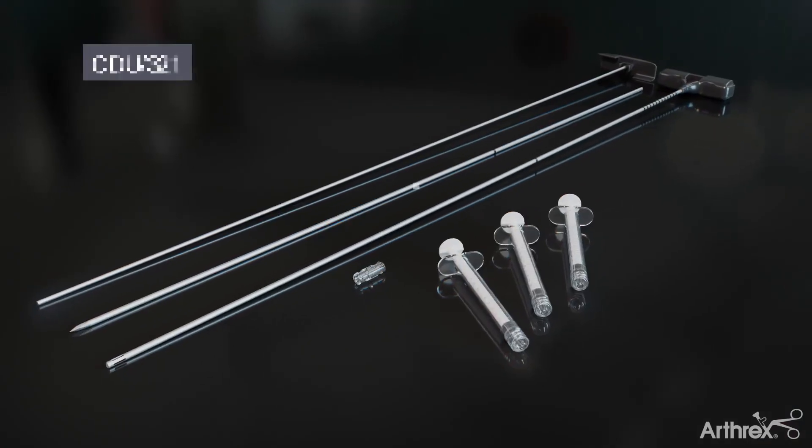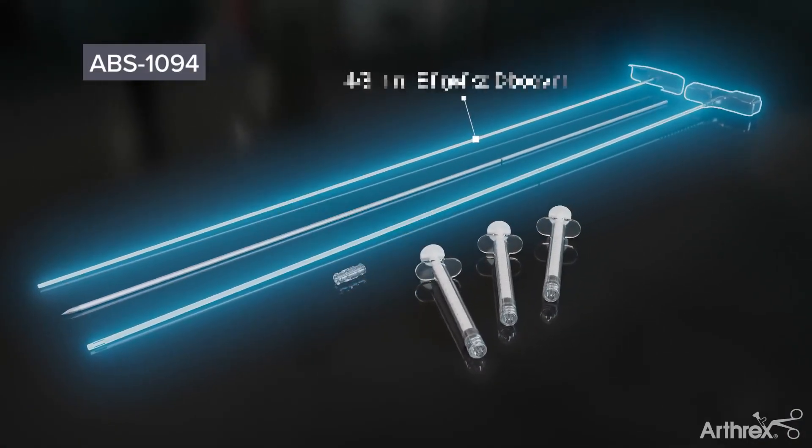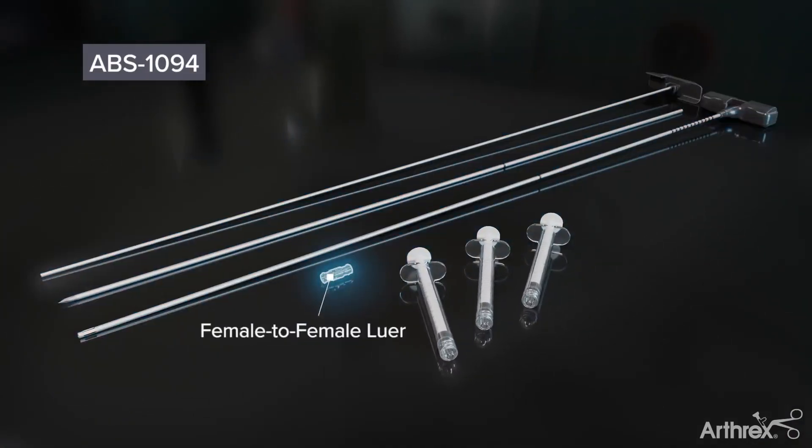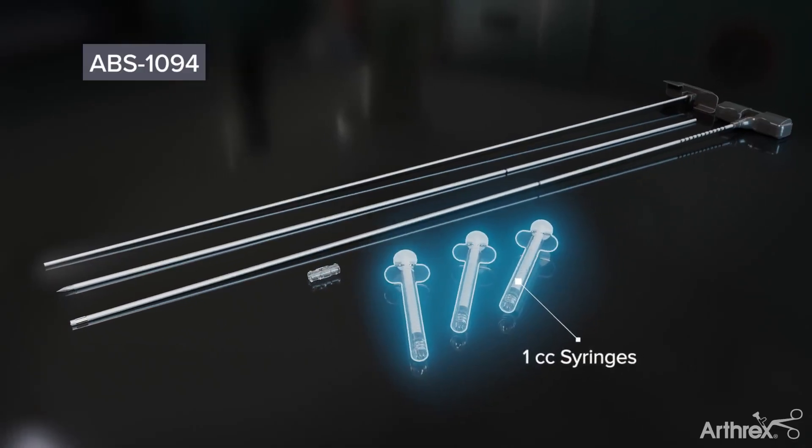The kit contains a 3.2mm guide pin, 3.2mm delivery cannula, female-to-female lure, and three 1cc syringes.